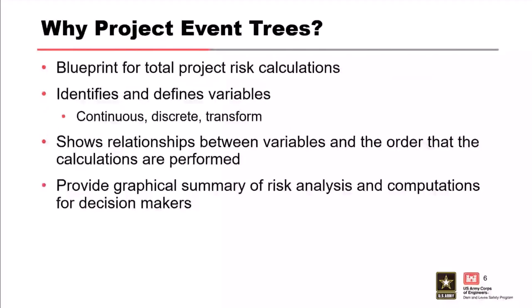Why do we use project event trees? They serve as the blueprint for the total project risk calculations. They identify all the variables used in the risk analysis and define them as continuous, discrete, transformed, or other. A project event tree shows the relationship between variables and the order that risk calculations are performed, serving as order of operations guidance. They ensure all elements of the general event tree framework are captured and that relationships between variables are correct.